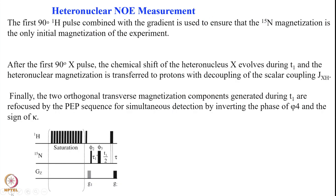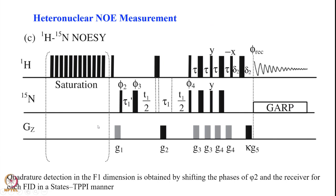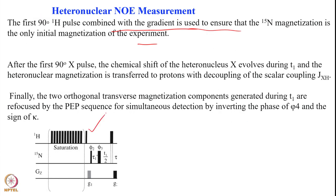A first 90° pulse applied on proton is combined with a gradient. This ensures that only N15 magnetization is present in the experiment. We start with a 90° pulse on proton, followed by a gradient, ensuring that magnetization only goes to nitrogen.